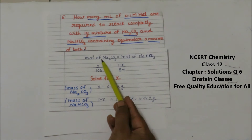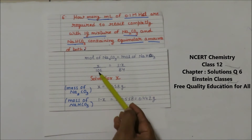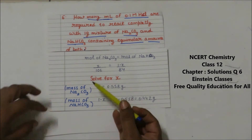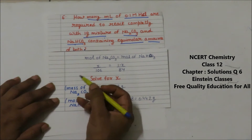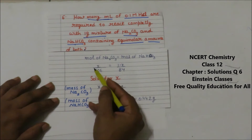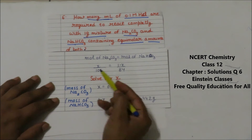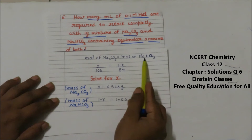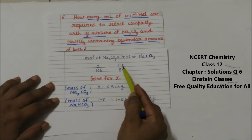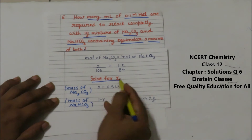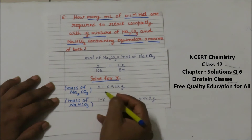Moles can be calculated as given mass divided by molar mass. The molar mass of Na₂CO₃ is 106 (Na = 23, C = 12, O = 16), so moles of Na₂CO₃ = X/106. Similarly, the moles of NaHCO₃ = (1 − X)/84, where 84 is its molar mass. Setting these equal, we can solve for X.